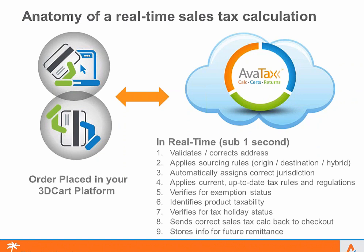We send tax calculations back to the checkout in a fast, sub-second manner, because you want to support high user conversion. You don't want disruption in that process. We deliver the speed necessary so your buyer has no effect on completing the order. The other component is providing a platform that stores all that data — both for filing and as an audit trail. If you get audited in the future, you have all the detailed data to provide the auditor.